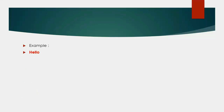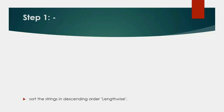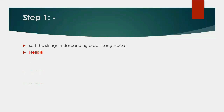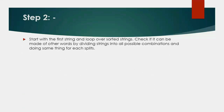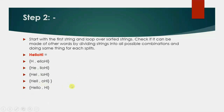Example: hello, hi. Step 1: sort the strings in descending order lengthwise — hello, hi. Step 2: start with the first string and loop over sorted strings. Check if it can be made of other words by dividing into all possible combinations: h/ello-hi, he/llo-hi, hel/lo-hi, hell/o-hi, hello/hi, and so on.